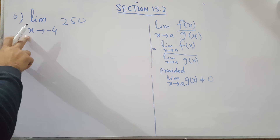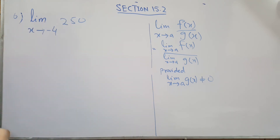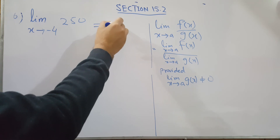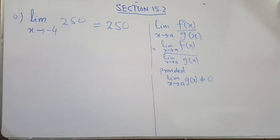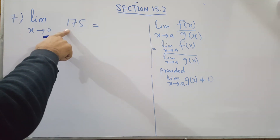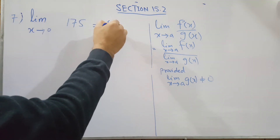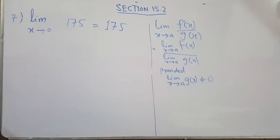The limit x approaches to minus 4 of 250: since 250 is a constant, the limit does not apply and the answer is 250. Similarly, the limit x approaches to 0 of 175: since 175 is a constant, applying the limit gives the same value, 175.